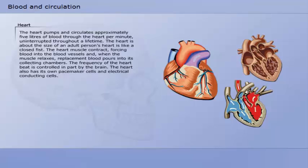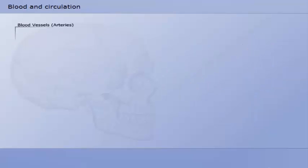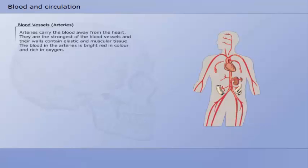The heart pumps and circulates approximately 5 liters of blood through the heart per minute, uninterrupted throughout a lifetime. The approximate size of an adult person's heart is about the size of a closed fist. The heart muscle contracts, forcing blood into the blood vessels and, when the muscle relaxes, replacement blood pours into its collecting chambers. The frequency of the heartbeat is controlled in part by the brain. The heart also has its own pacemaker cells and electrical conducting cells.